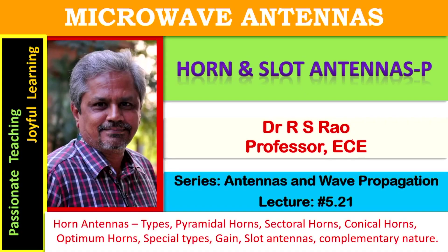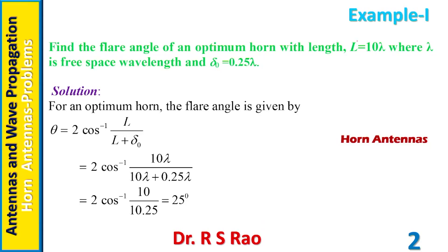Microwave antennas: problems on horn and slot antennas. Series on antennas and wave propagation, lecture number 5.21. In the present session we consider and solve several problems on horn antennas and slot antennas. These problems are mainly concerned with directivity, length, effective aperture, beam width, and in case of slot antennas, problems are also concerned with impedances.